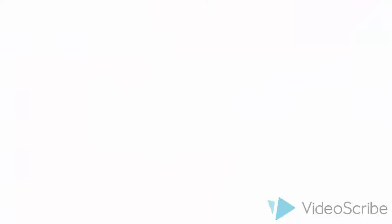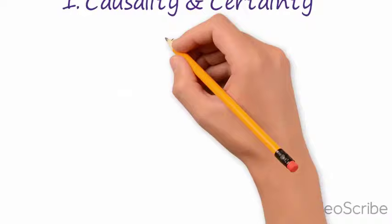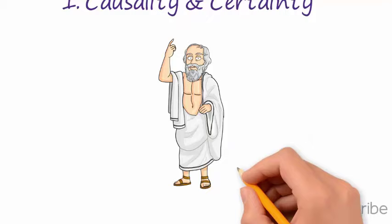For the old tradition of demarcation, it all started with the Greeks. We start by the causality and certainty developed by Aristotle. He suggested that science must deal with causality and be derived from universals, and should deal with the know-why, not the know-how.